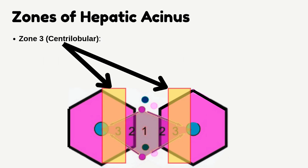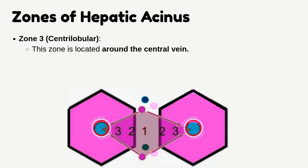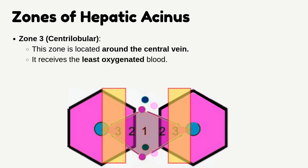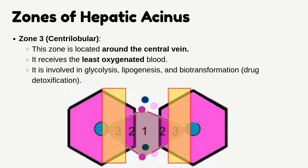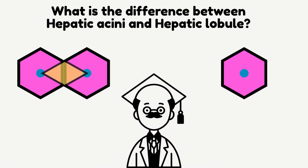Zone 3 is the Centrilobular zone. This zone is located around the central vein and receives the least oxygenated blood. It is involved in glycolysis, lipogenesis, biotransformation, and drug detoxification.